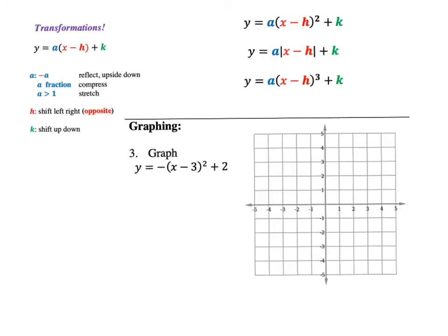Transformation form is really cool because it works with all different kinds of functions, as long as you remember to keep the h inside the function and the a and the k outside of the parentheses. H is horizontal along the horizontal axis, so h is with the x — think of h for horizontal. The k and a are outside the parentheses which make up the function. For example, x squared looks like a parabola, the absolute value of x looks like a V, and x cubed looks like an S-curve. Every parent graph has a different shape, but the a, h, and k all do the exact same thing.